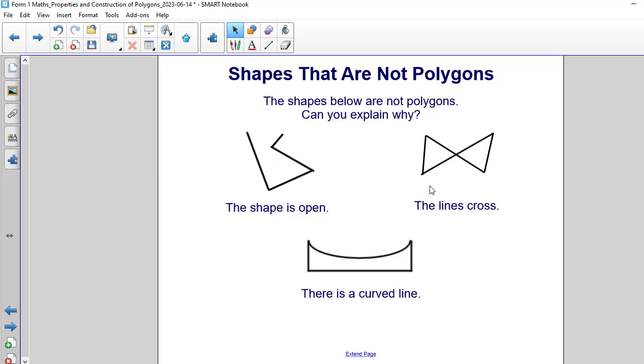In this second shape over here on the right the lines cross, and that's the reason why this shape is not a polygon. A third reason why a shape is not a polygon is because this one contains a curved line. By looking at these three examples can we determine what makes a shape a polygon.